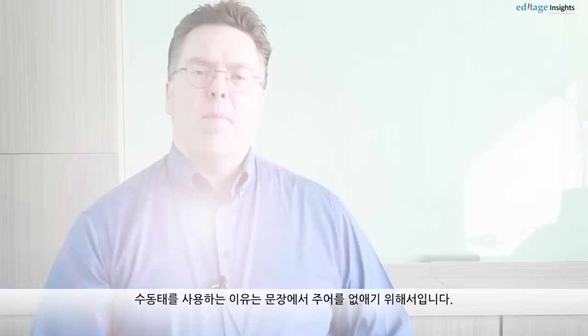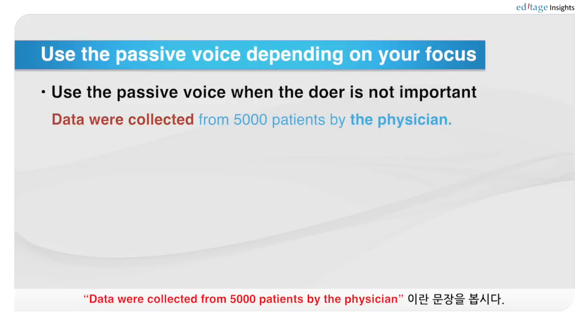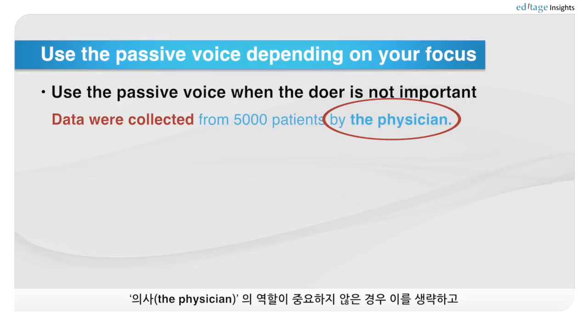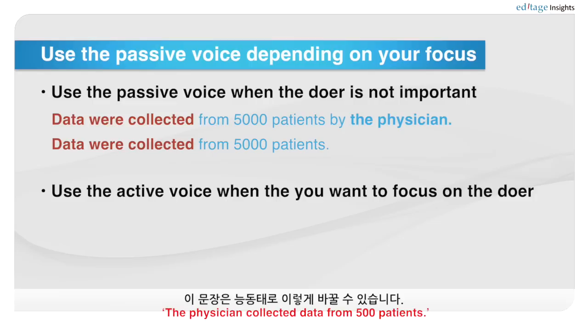There's a lot of confusion about using the passive voice. The use of the passive voice is to take the human out of the sentence. So in a sentence like 'data were collected from 5,000 patients,' the phrase 'by the physician' isn't really important and can be cut — you can just say 'data were collected.' However, if it's important that the physician did it — not the nurse, not the researcher, but the physician — then using the active voice, this becomes: 'The physician collected data from 5,000 patients.'